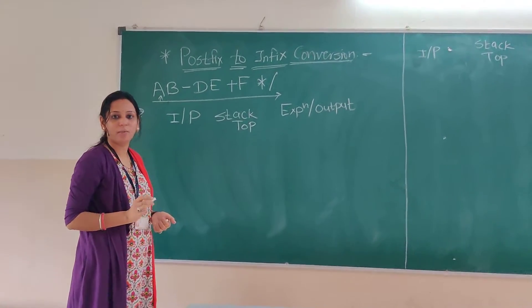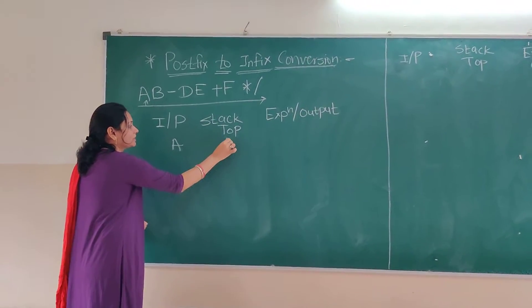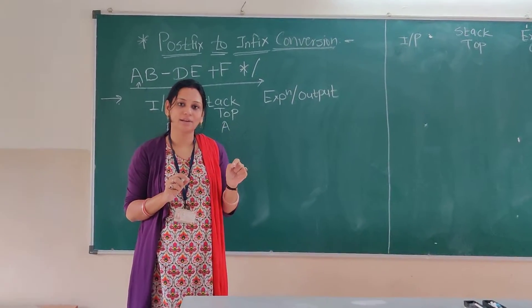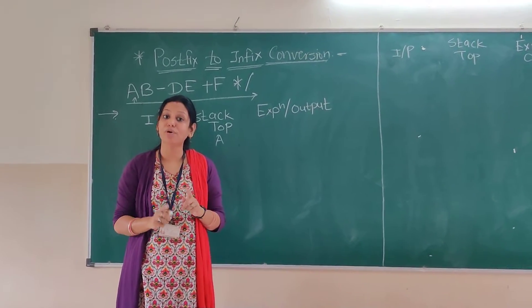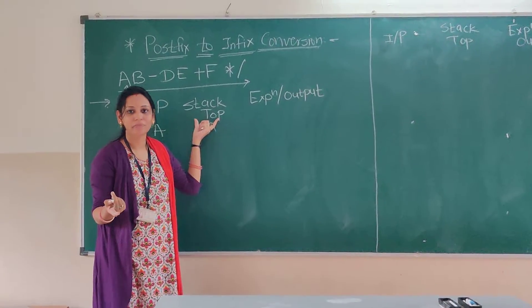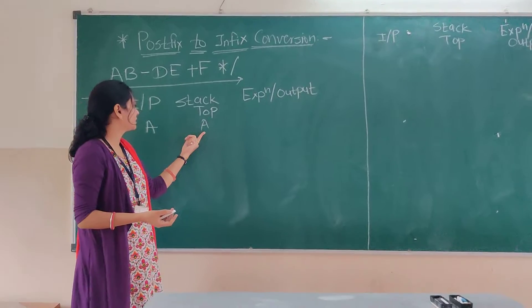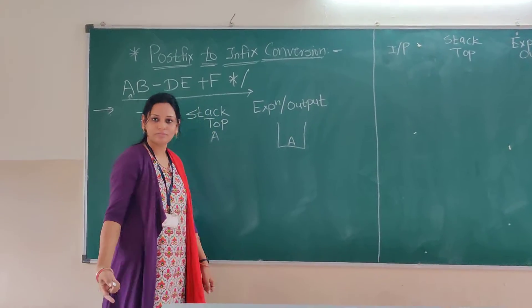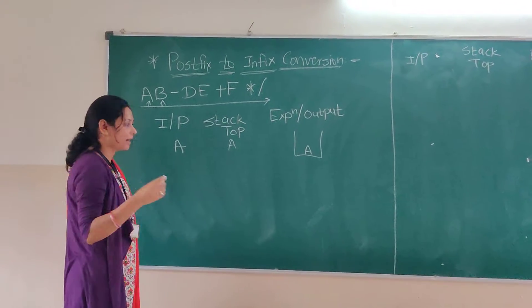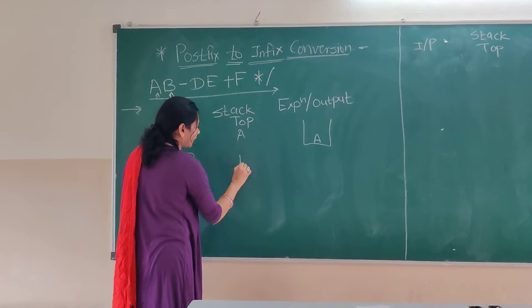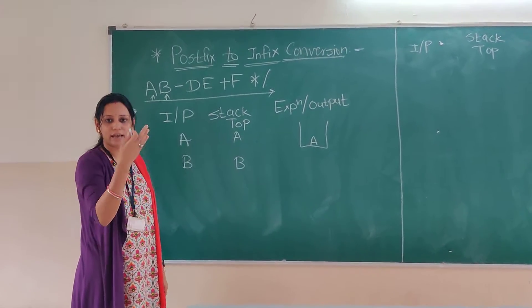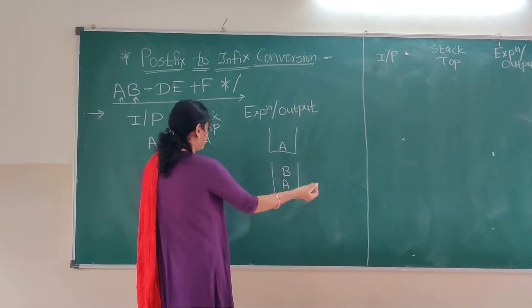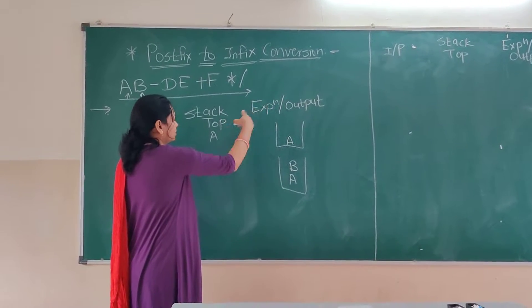Our first element is the operand A, so the stack top is A. Stack is a data structure where we insert and delete elements from one end, which is called the top. So here, the stack contains A. Next is B, which is also an operand, so the stack top becomes B. Since stack is LIFO, we now have A and B on the stack, with B at the top and A below it.